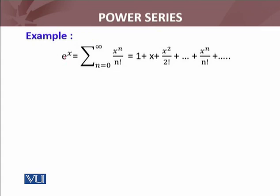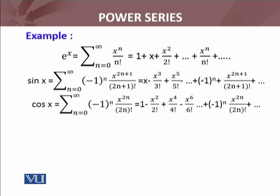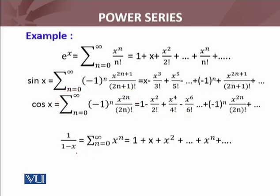e raised to the power x — e is an irrational number which I have discussed before. The McLaurin series of e^x is given by summation of x raised to power n divided by n factorial, and if I expand it, this is the resulting expression. The McLaurin series, or power series, of sine x is given by this expression. Similarly, the power series of cos x is written in series form and in expanded form. And 1 over 1 minus x — its McLaurin series, which is a power series — is given by this one. Now I will discuss the formal definition of power series with you.